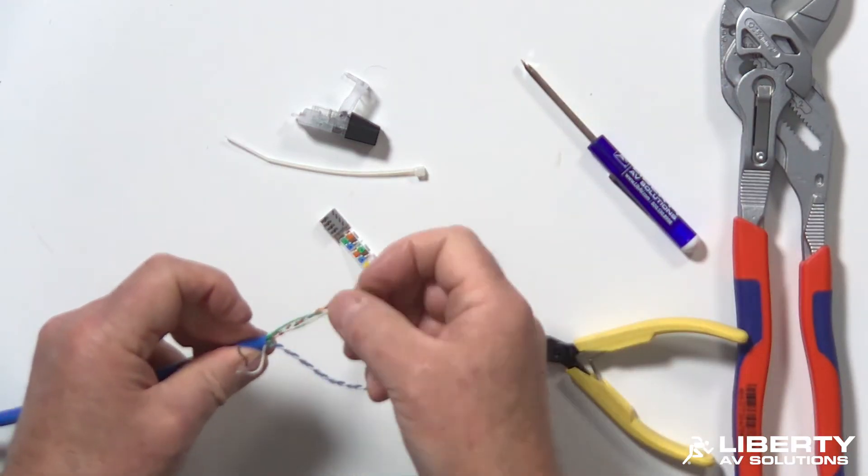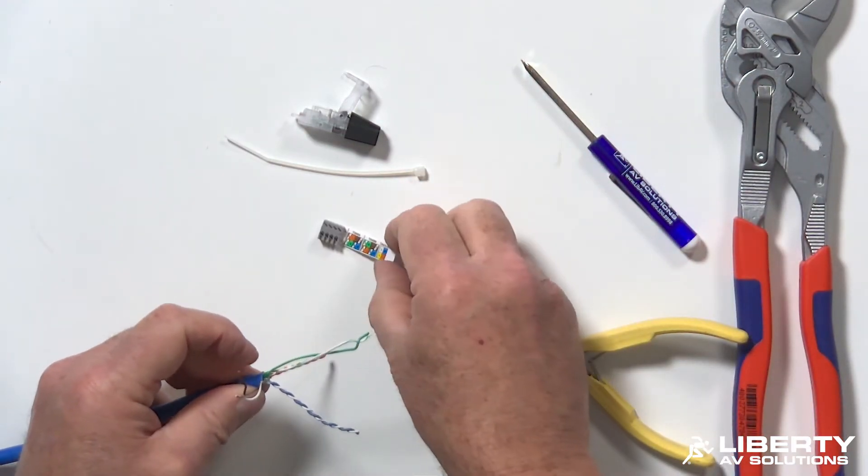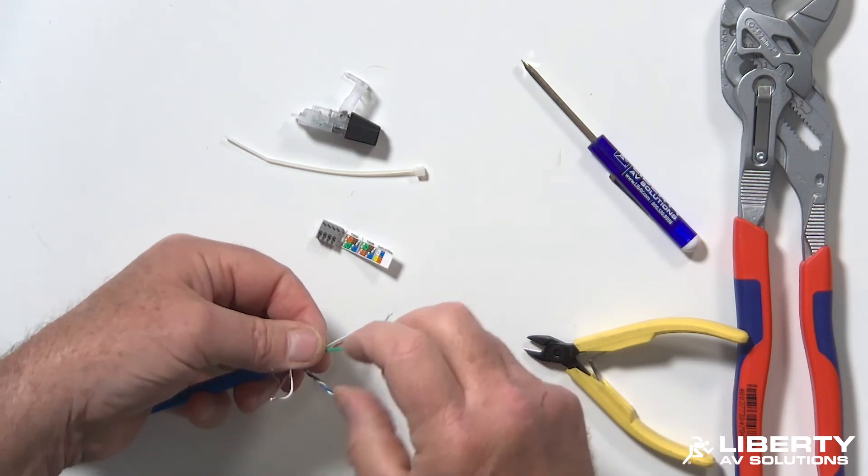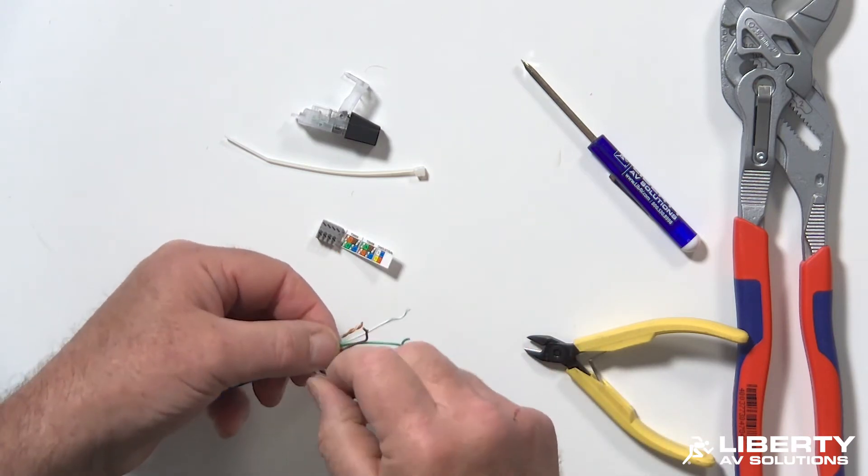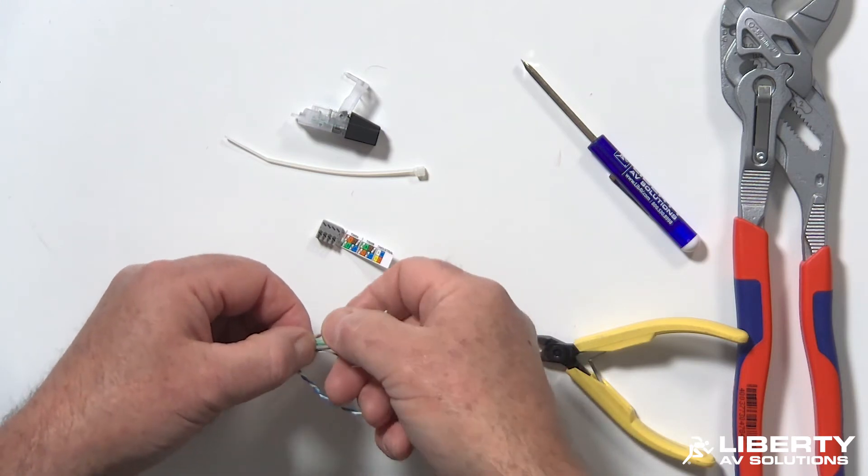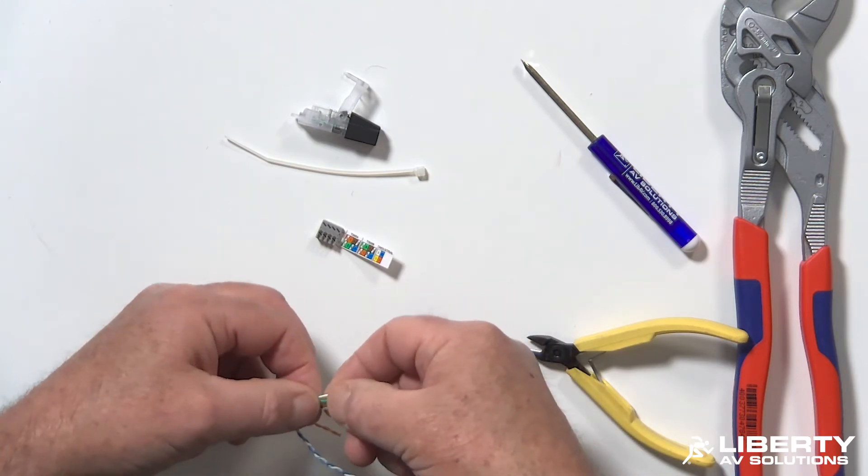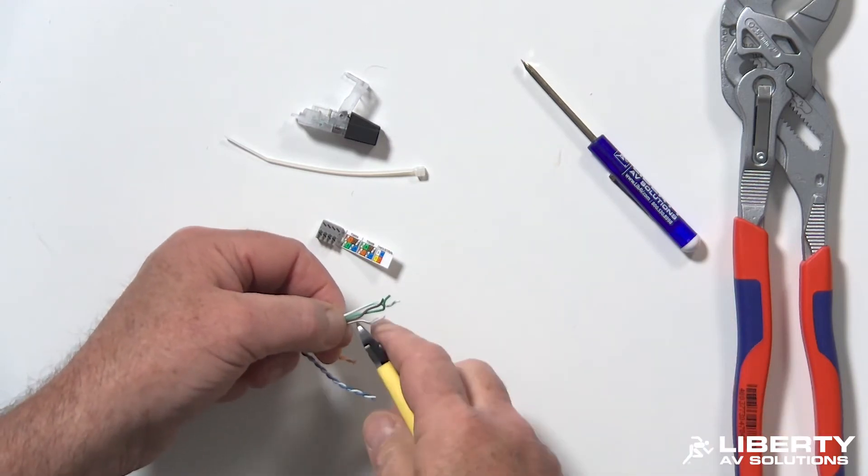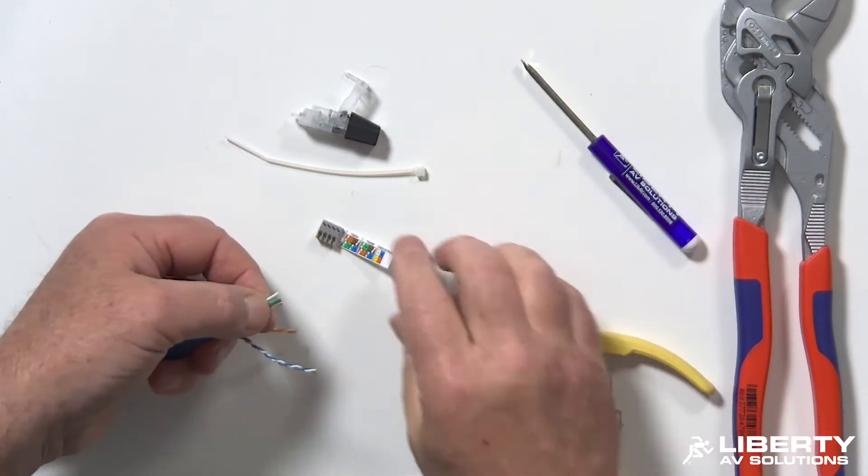I'll go ahead and straighten out my pairs. So I want to get them in the right color code. So I need white, green, green, and then brown, white, brown. So the two solids in the middle basically. Once I get those, I go ahead and trim off this rough spot up here so it slides in nice and smooth.